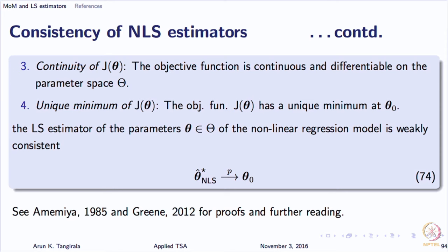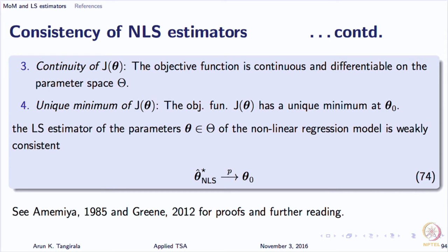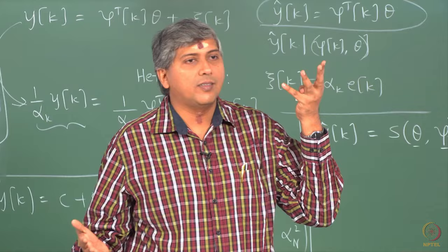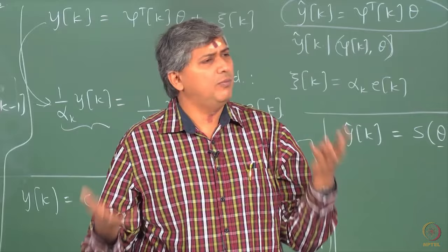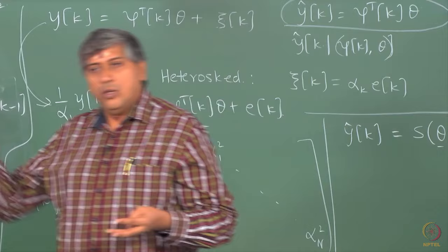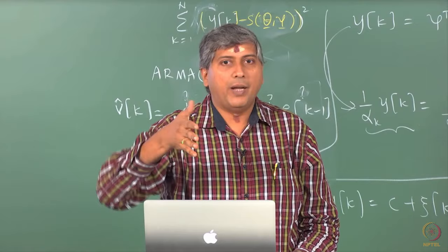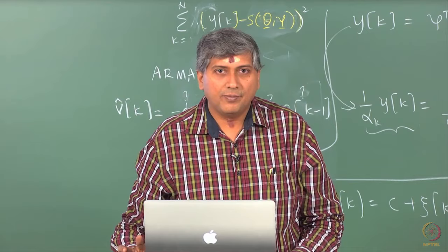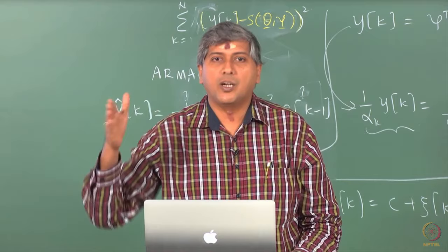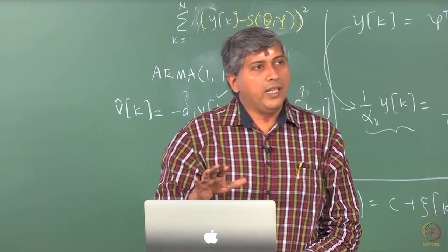There is one more subtle aspect in non-linear least squares. In linear least squares, regressors and explanatory variables are more or less the same. But in non-linear least squares they can be different. Your explanatory variables might be, say, pressure and volume. Suppose I take the ideal gas law — I have temperature, pressure, and volume readings. The relationship is non-linear. But when I look at the regressor, it is not pressure and volume separately — it is the product of pressure and volume.